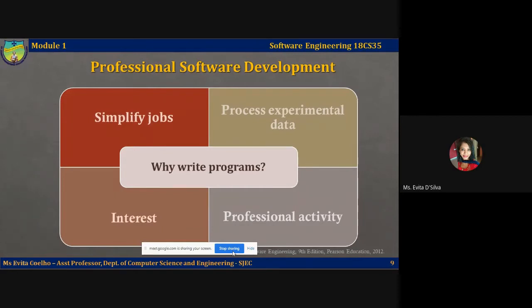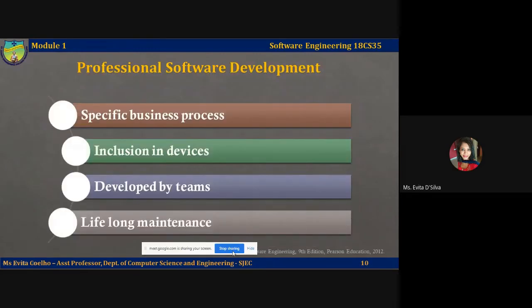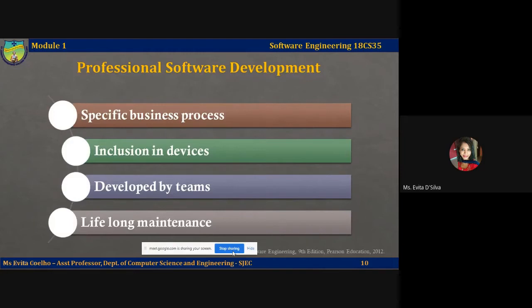Let's see what is professionally developed software or what is this professional activity of developing software. Most of the time, professional software is developed with a particular business process in mind. A client who has a business or a business strategy may come to a development organization and say, 'This is what I want — I want a software to automate these things with this objective in mind.' So the development organization writes software keeping that particular business client in mind. This is one of the first objectives for writing professional software: keeping a specific business process or client in mind.